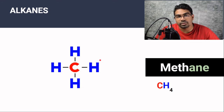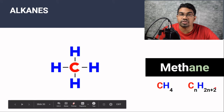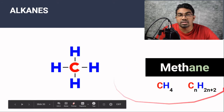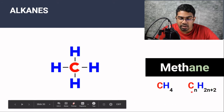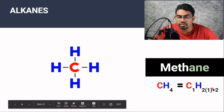Now we can link it back to the general formula for alkanes: CnH(2n+2). The number of carbons in methane is 1, so n = 1. If n is 1, then H = 2(1) + 2 = 4. This confirms the molecular formula CH4.